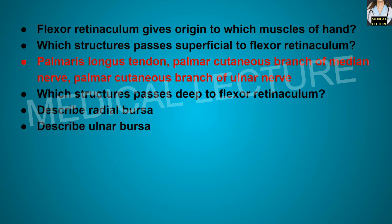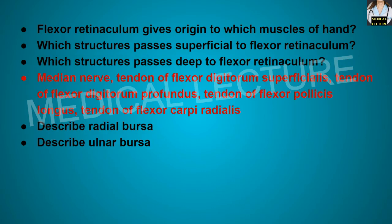Which structures pass deep to the flexor retinaculum? The median nerve, tendon of flexor digitorum superficialis, tendon of flexor digitorum profundus, tendon of flexor pollicis longus, and the tendon of flexor carpi radialis are the structures passing deep to the flexor retinaculum.